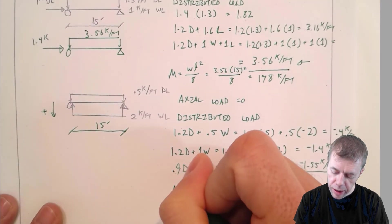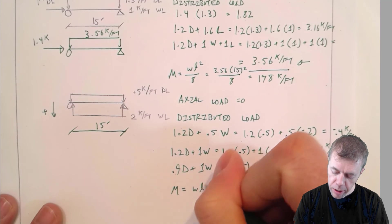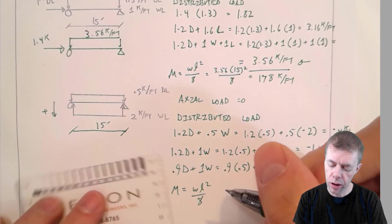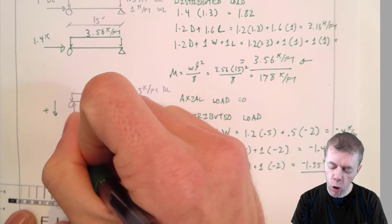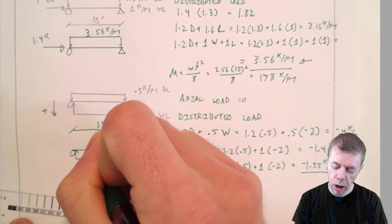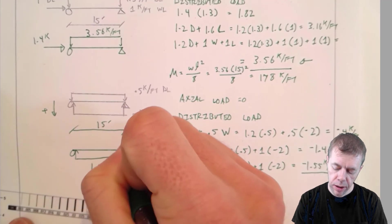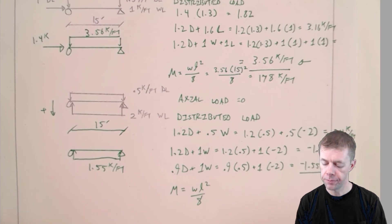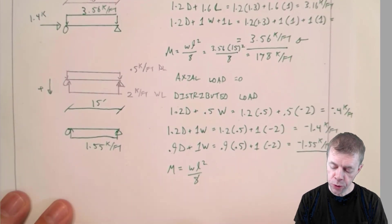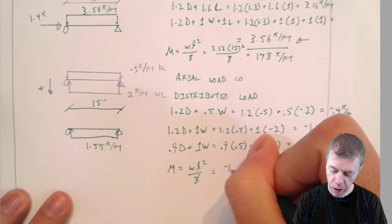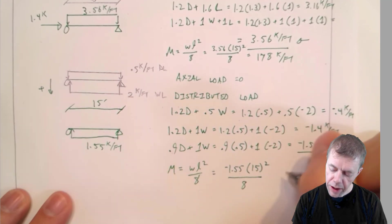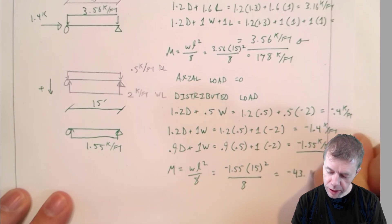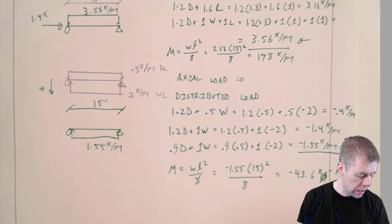So our moment is again still going to be WL squared over 8, but it's strange. Let's draw our composite structure. So what we're actually designing for is a structure with an uplift, an overall uplift of 1.55 kips per foot. And our moment, once we do this, is again negative 1.55 times my length 15 feet squared divided by 8. And that's equal to negative 43.6 kip feet.